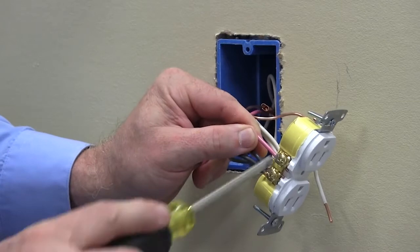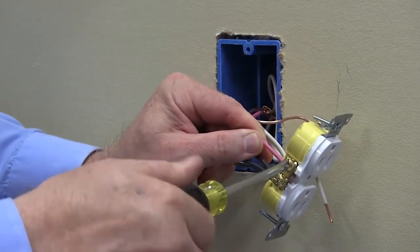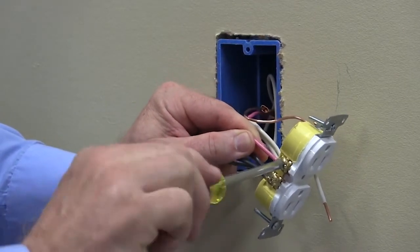Using the red wire, terminate the top half of the receptacle for split wire circuit control.